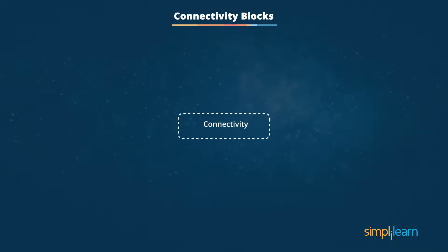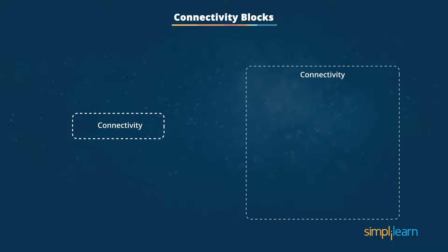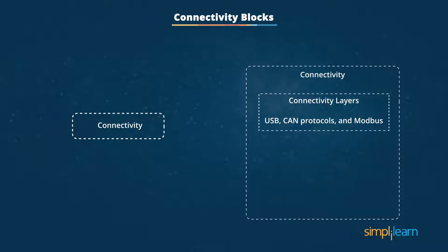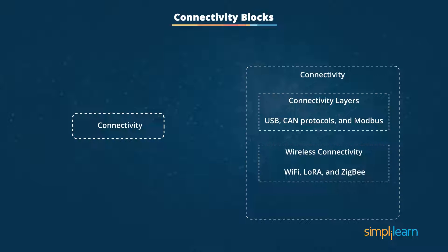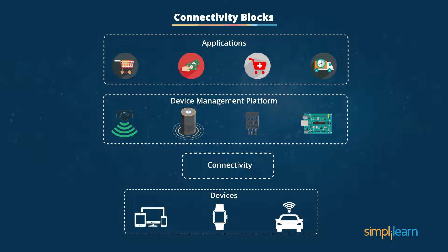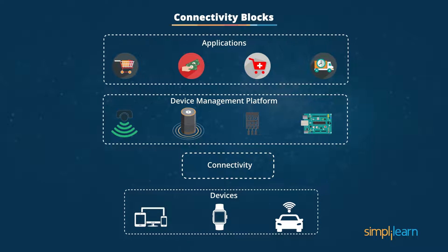Connectivity blocks are considered the backbone of an IoT setup. There are various connectivity layers like USB, CAN protocols, and Modbus. Next-generation protocols of Wi-Fi include LoRa and Zigbee, which can interface with any application or modules — a small device embedded in an object. The entire landscape is called gateway architecture. Various ports such as RS-232 and RS-485 from USB come with this gateway architecture. The device interface enables data transfer and digital transformation with third-party applications and systems.